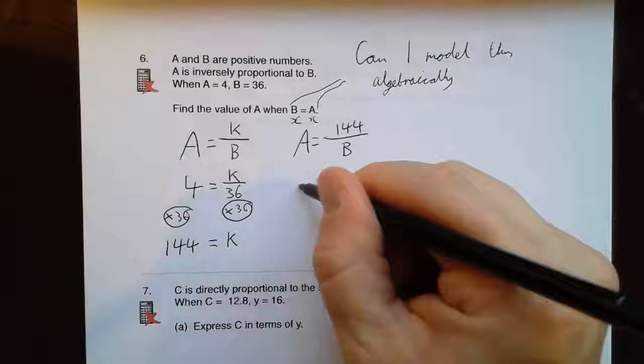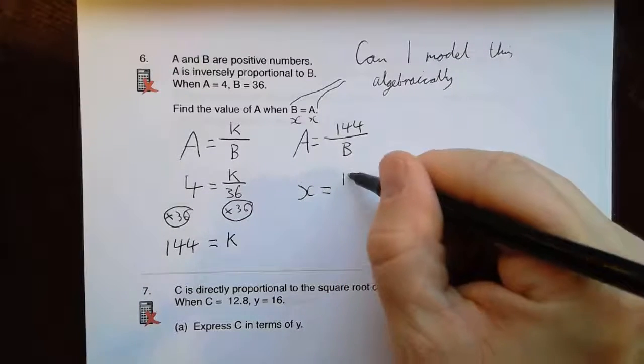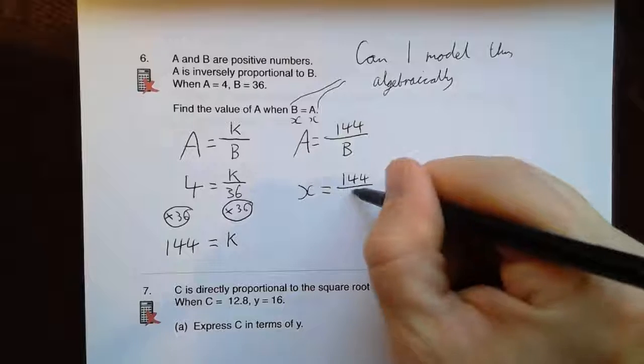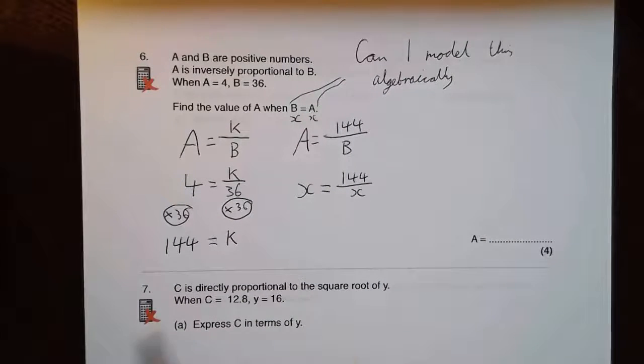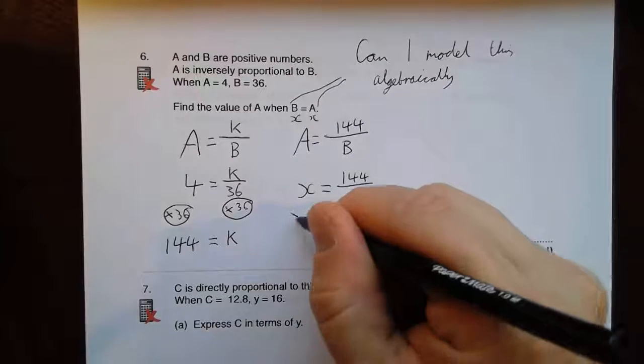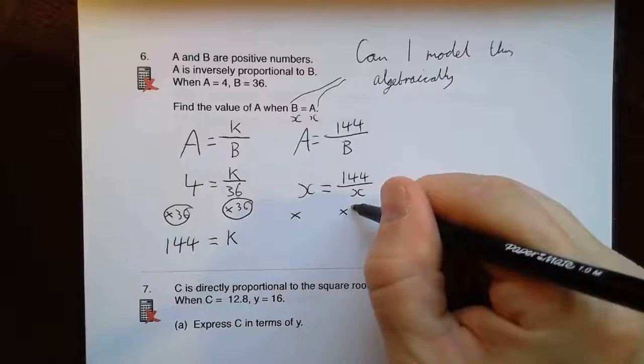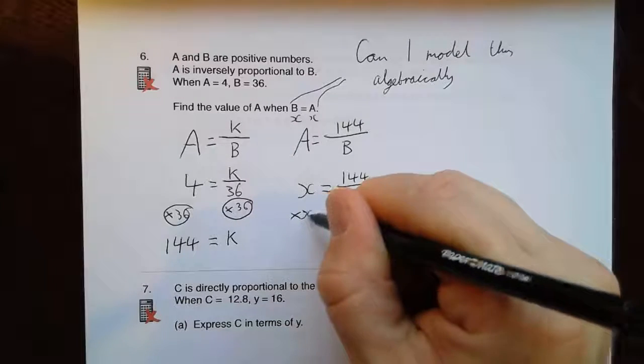X equals 144 over x. This is my key step where people would not see to model this situation algebraically. Once you've got that, I can now just work with the algebra. I don't want that x on the bottom. So I'm going to times both sides by x.